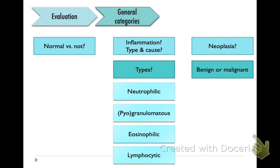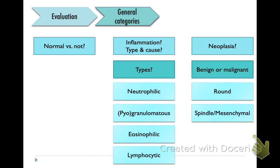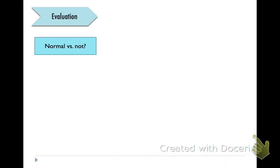If you have neoplasia, you need to know whether it's benign or malignant, and the categories of that are going to be round cell, spindle or mesenchymal, epithelial, and other types of neoplasms.